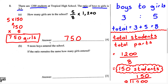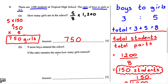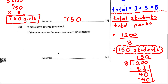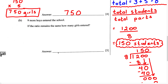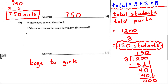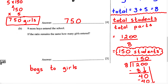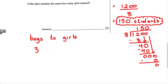Now for part B, it says nine more boys entered the school. If the ratio remains the same, how many girls entered? Let's read it one more time: nine more boys entered the school; if the ratio remains the same, how many girls entered? Well, we know the ratio is going to be the same, so let's set this problem up. This is going to be a proportion problem. Remember, the ratio is boys to girls, so we have boys to girls, and we know the ratio is going to be 3 to 5.